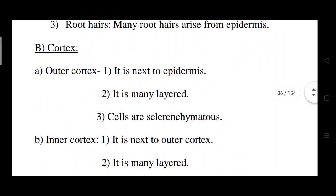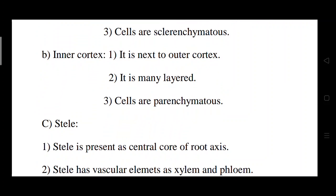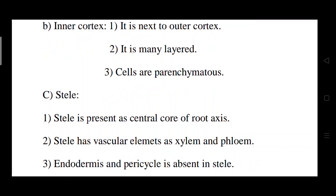Next, inner to the epidermis, is the cortex region. This cortex region is divided into two parts: outer cortex and inner cortex. The outer cortex, present next to the epidermis, is made of many layers of sclerenchyma cells. The inner cortex, next to the outer cortex, is also made of many layers in which parenchyma cells are present.